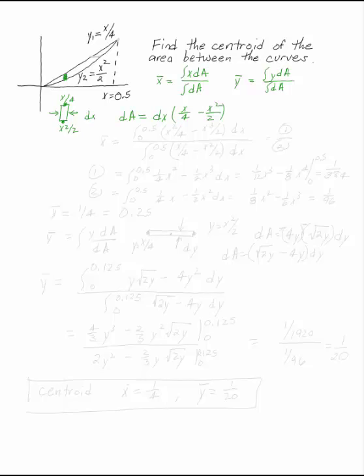We can plug this into those integrals and evaluate them. x̄ is the integral of x dA from 0 to 0.5, which gives you (x²/4 minus x³/2) dx, divided by the integral from 0 to 0.5 of (x/4 minus x²/2) dx.